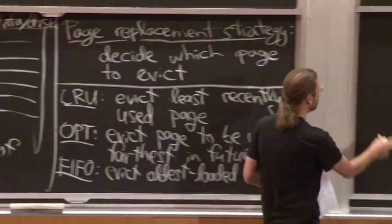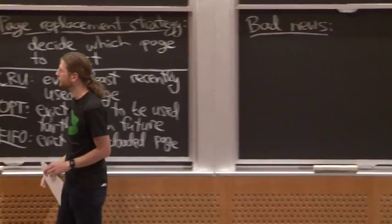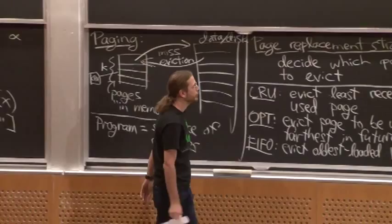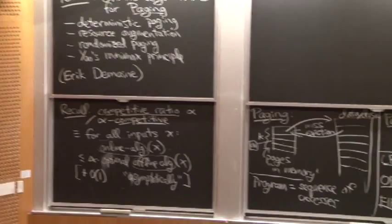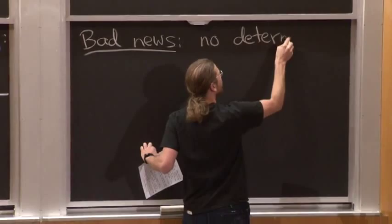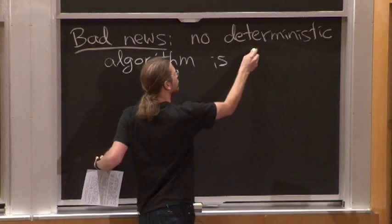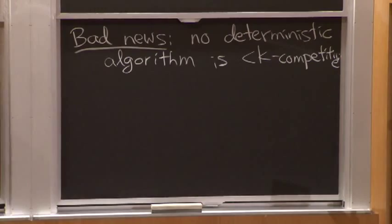Let's start with bad news. Today we're going to be doing a lot of upper bounds and lower bounds, and they're all basically tight — this is a well-understood field that started with Sleator and Tarjan in 1985. They introduced this problem before online algorithms even existed; this is basically the first paper on online algorithms. The bad news is that no deterministic algorithm is really very good for large cache — the best you can hope for is k-competitive.